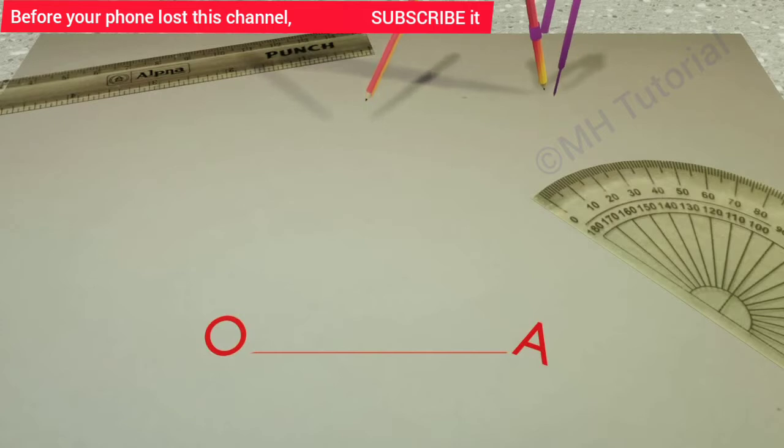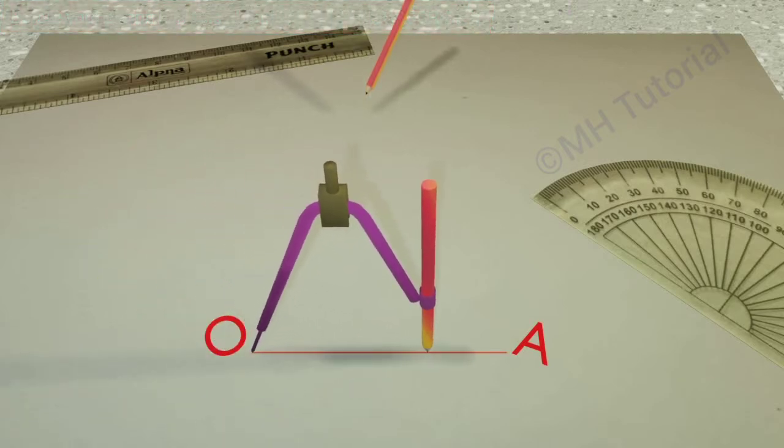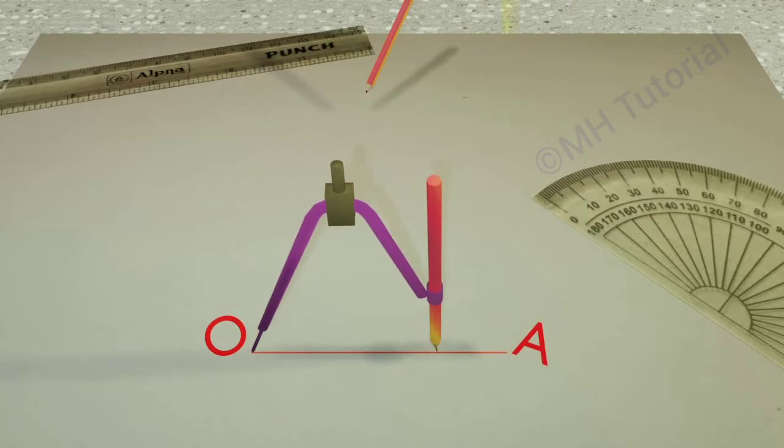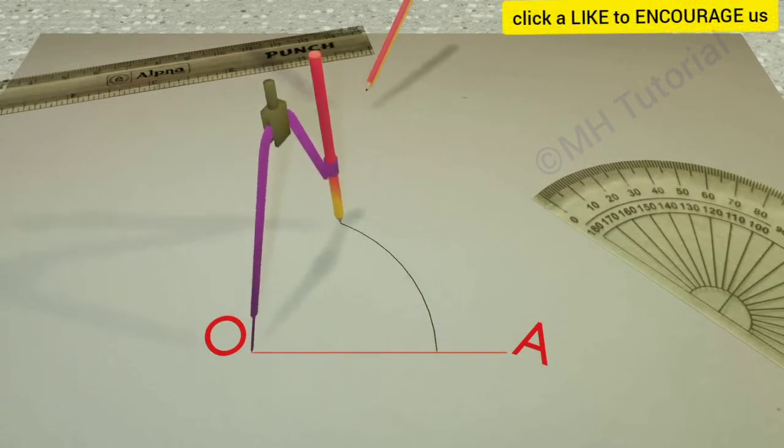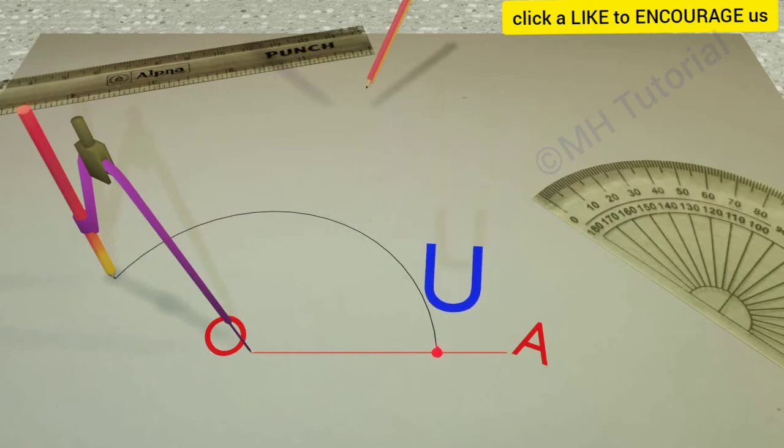We need to use a pencil compass. A circle segment of any radius is drawn by taking the point O as the center. This length of radius will be kept constant throughout the process. This circle arc crosses the line OA at the point U.